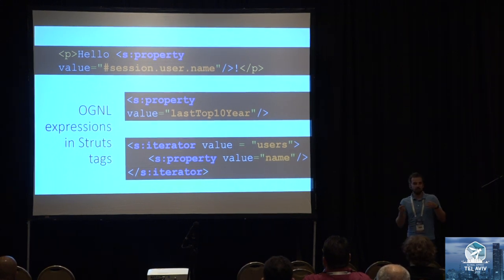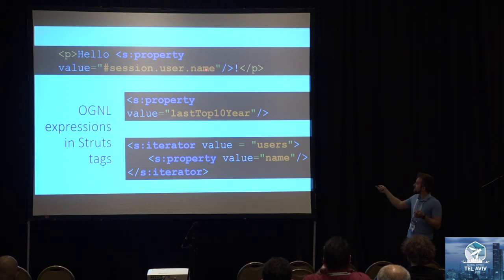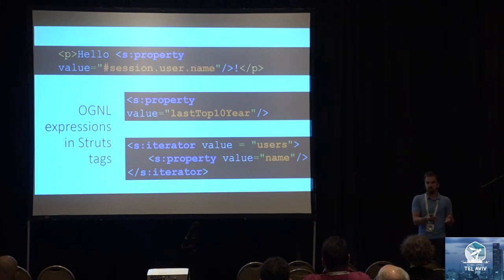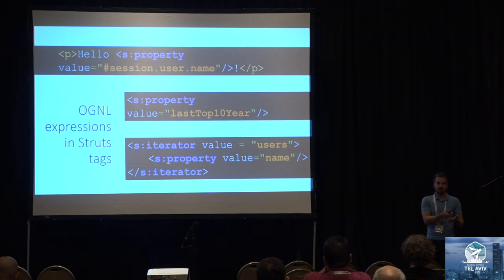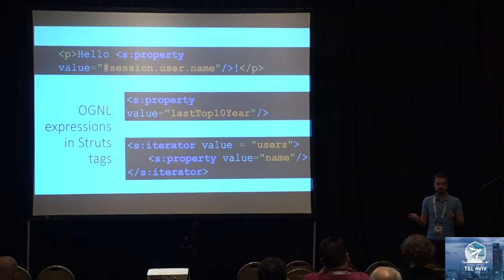These are examples of views that are using Struts. I've taken a Struts tag — in purple — with a column property, and the tag is used to get data from session username. This is the OGNL expression — in orange. The view takes an OGNL expression, takes the data from the model using that expression, and populates the view with data. In the end, you will see 'hello username' instead of this horrible construction. This is the most common case of how OGNL is used in Struts.